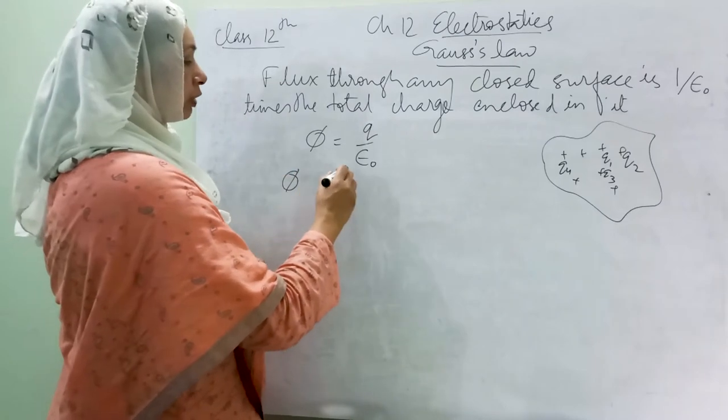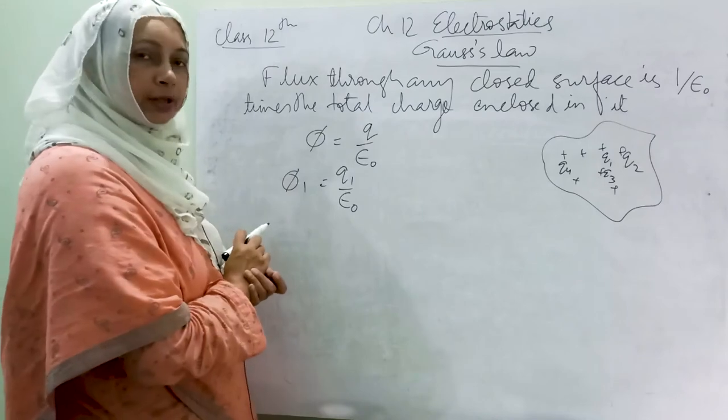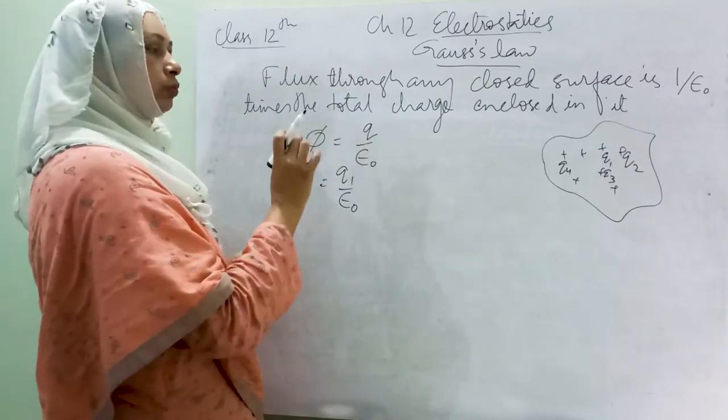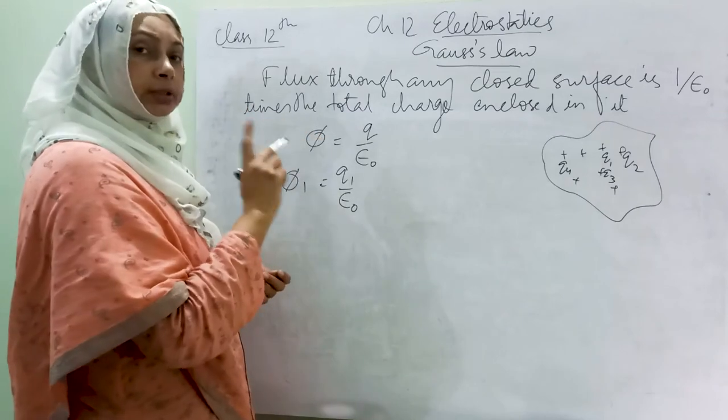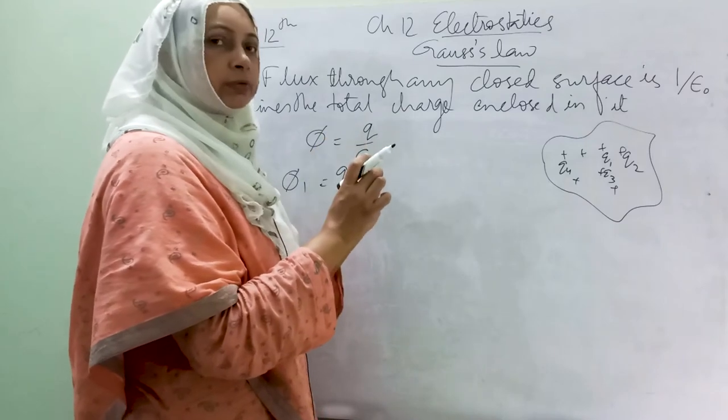Flux due to Q1 will be Q1 by epsilon naught and I will call it phi-1, the small flux through that surface which is enclosing the small point charge Q1. Because fluxes are scalar quantities, we will calculate each of the fluxes due to each of the charges.